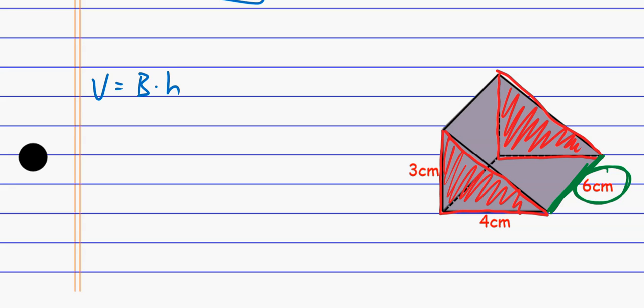And so the area of the base this time, the base is a triangle. And so to find the area of a triangle, I do one-half its base times its height. So that's how I find the area of this triangle. The area of this triangle then is going to give me six, and that's square centimeters.